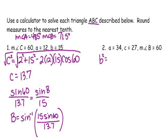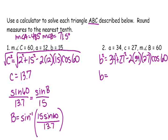B squared is equal to my two sides squared, so 34 squared plus 27 squared minus 2 times 34 times 27 times the cosine of 60. Go ahead and solve this for B. Tell me what B equals.